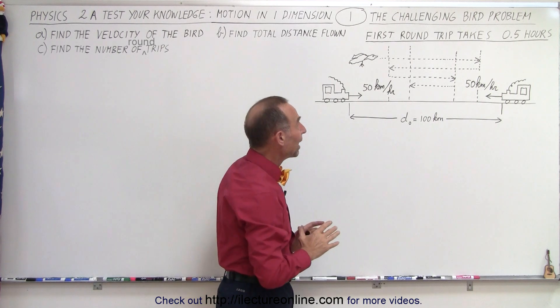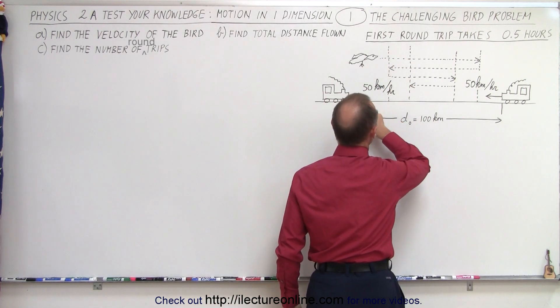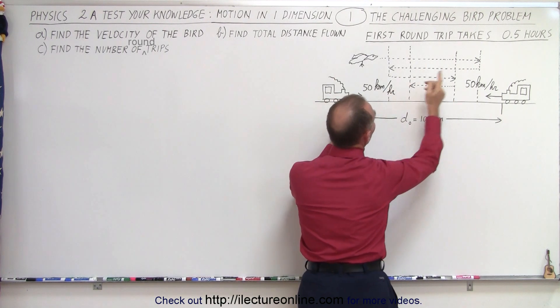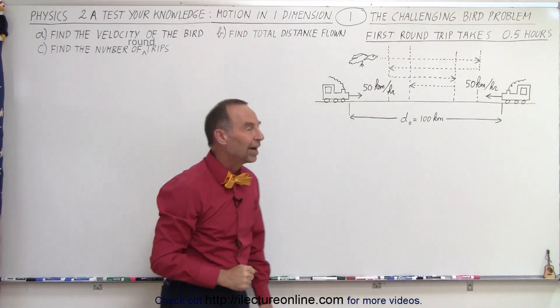The only information that we have is that the first round trip, by the time the bird reaches the train on the way back, the train here will have moved a certain distance, and the bird will have reached that train after 0.5 hours.